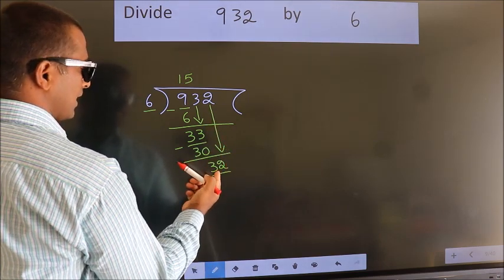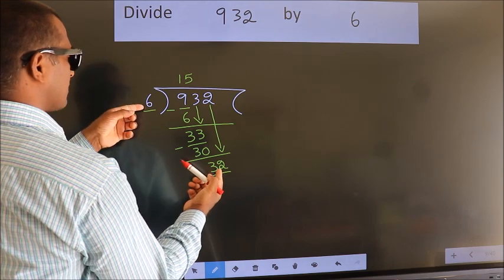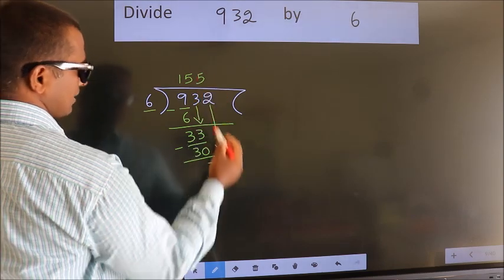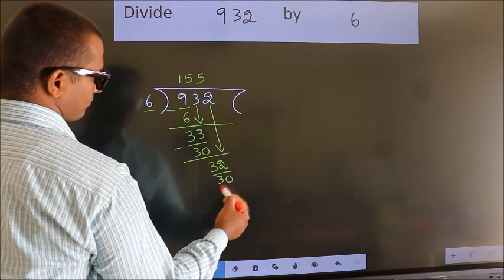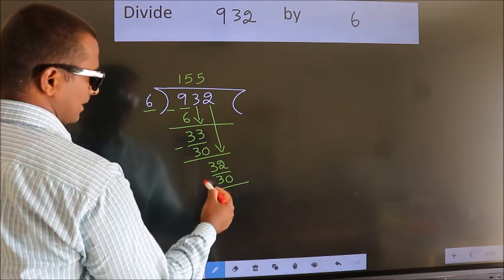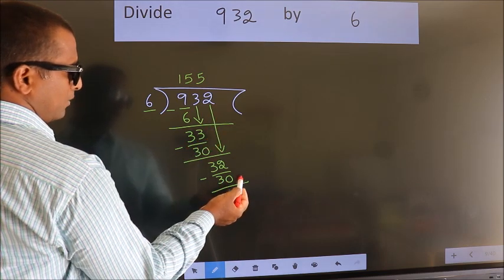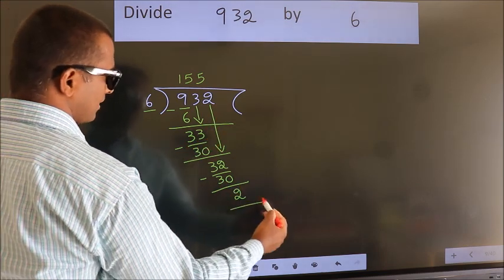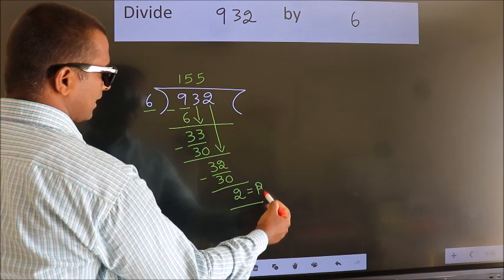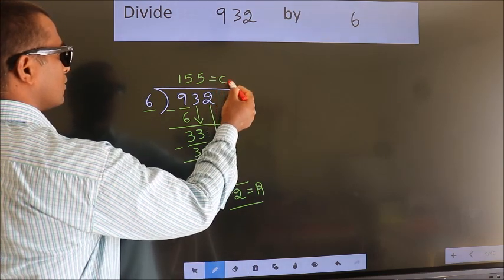A number close to 32 in the 6 table is 6 times 5, which is 30. Now we subtract. We get 2. No more numbers to bring down. So we stop here. This is our remainder. This is our quotient.